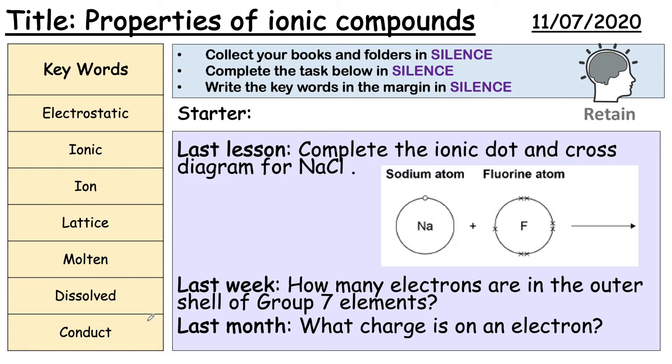So the first one says complete the ionic dot and cross diagram for sodium chloride. We need to look at this diagram here and if you remember from the last video every element needs a full outer shell and that is eight. This one here is fluorine atom has seven electrons and this sodium has one and the best way for sodium and fluorine to achieve a full outer shell is if this sodium here donates the electron to fluorine.